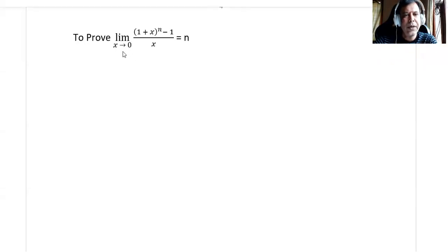The limit as x tends to 0 of (1 plus x) to the power of n minus 1, divided by x, equals n. Let us prove this.